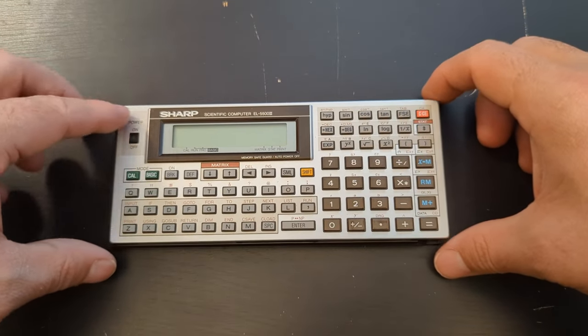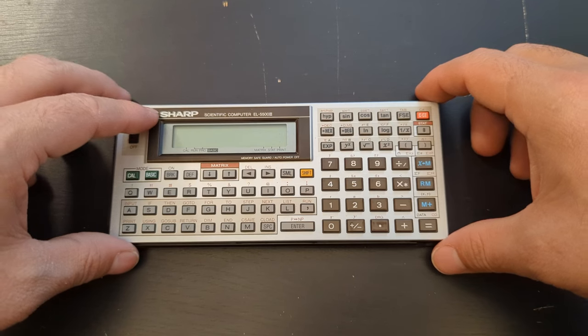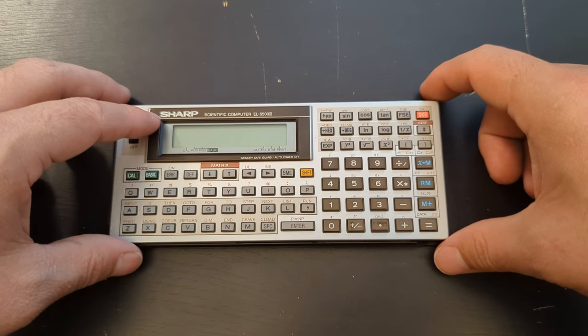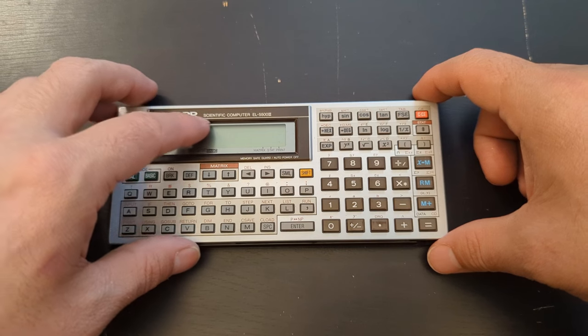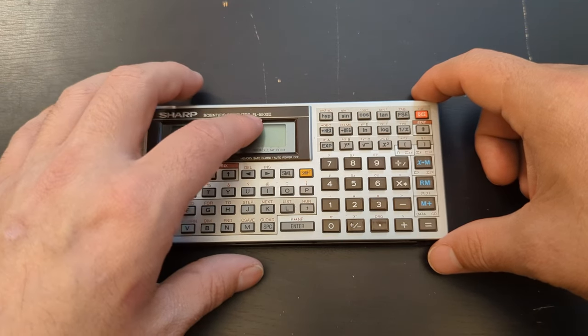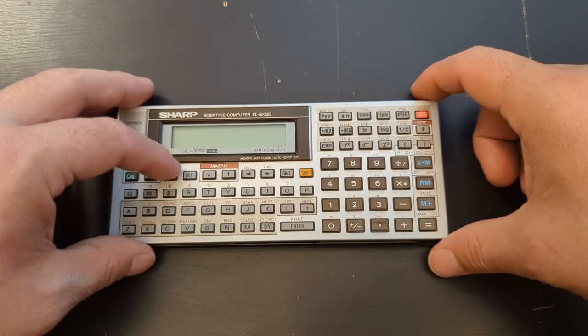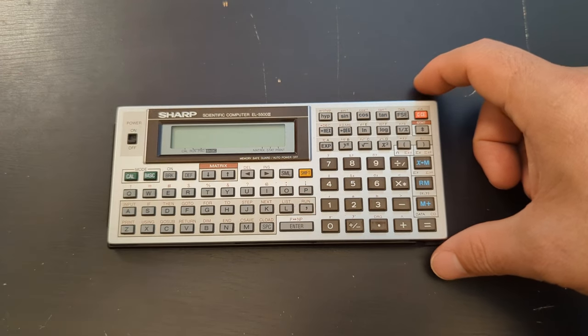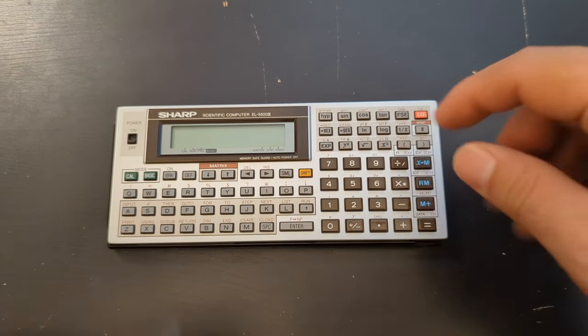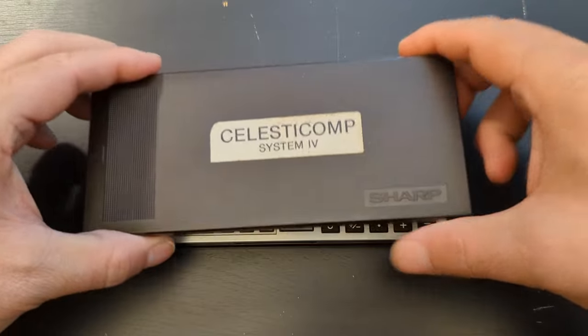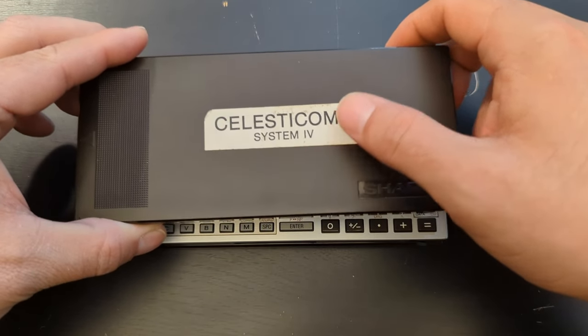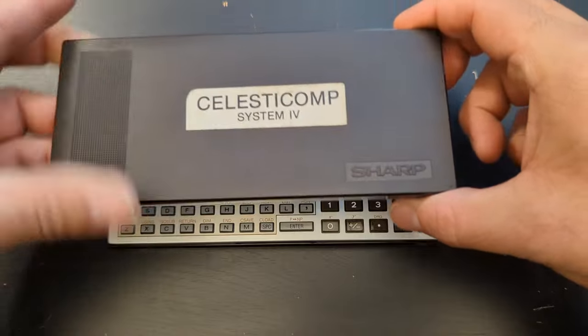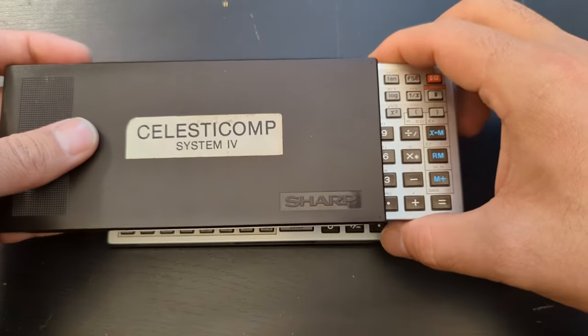Because I've seen these sold under a few different names I think one of them was Fisher which sold I assume some sort of electrical calculator. And I even have one of these which you can see here, this one's been labeled as a Celesticomp System 4 which would be a Celestial Navigation Computer.